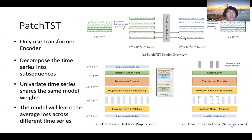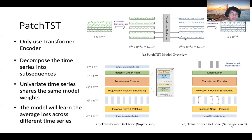We split the original multivariate time series into separate univariate time series, and then they share the same model weights during the training. So the model will learn the average loss across different time series in the training process.